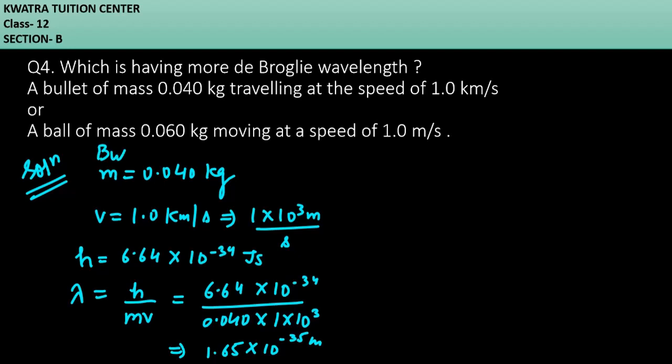First, we have calculated the bullet. Let's calculate for ball and let's find out whose wavelength is more. So for ball, you have mass, it is 0.060 kg and speed, it is 1 meter per second. H is given, it is 6.64 into 10 raised to power minus 34 joule second. Then you can find the wavelength for this case.